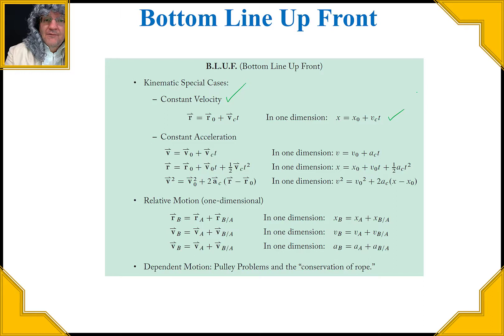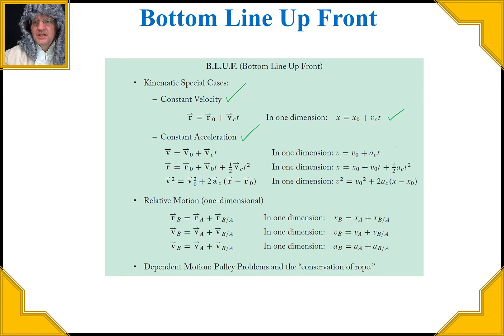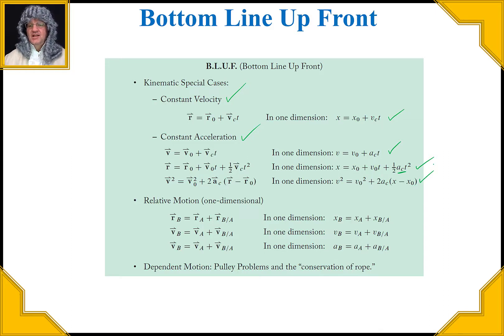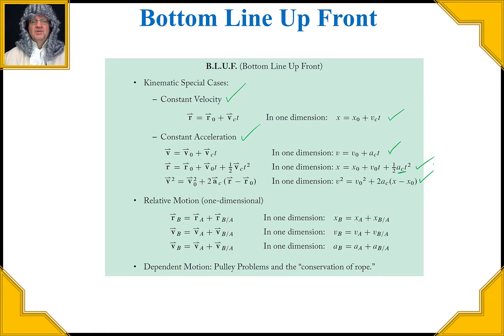Another special case is when acceleration is constant. We can write out equations relating velocity, acceleration, and time, and also relating position, velocity, time, and acceleration. We can also use the wildcard equation from class one, which gives us a relationship between velocity, acceleration, and position — without time appearing at all. That's an interesting equation to keep on the lookout for.